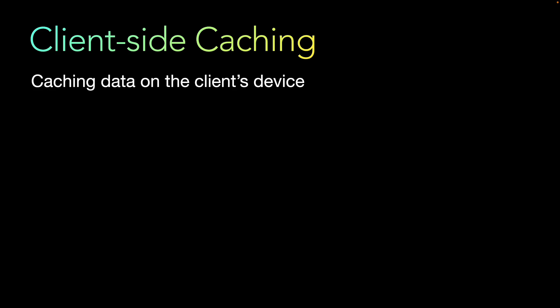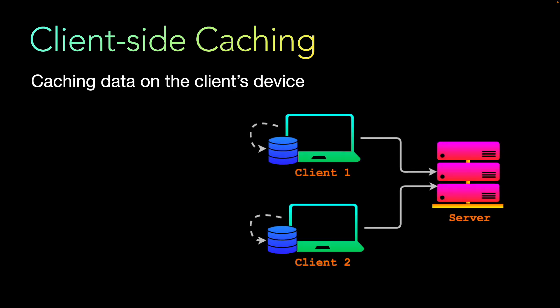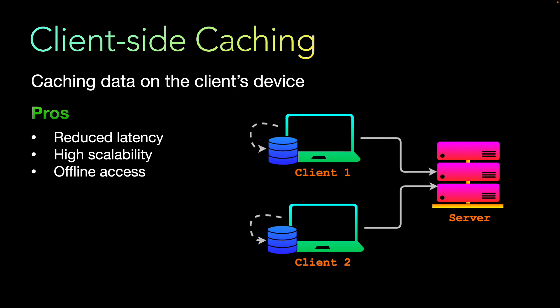Now let's look at client-side caching. Client-side caching is just the opposite — you are caching the data on the client's device, across any number of clients. This reduces latency obviously because there is no network round trip to the server. It is also highly scalable because it offloads the work from the server, handling more clients without additional server resources.